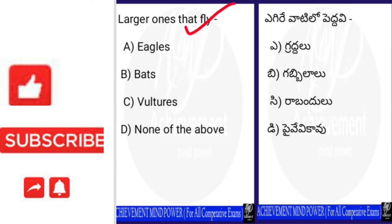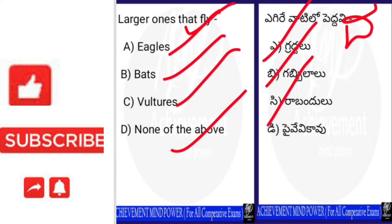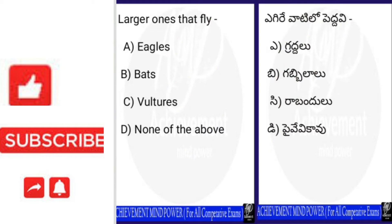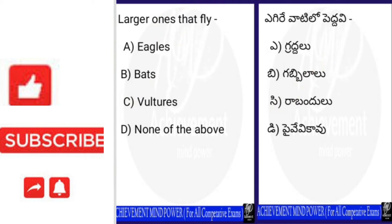Next question: what is the larger one that can fly? Options are: A. Eagle, B. Bats, C. Vulture, D. None of the above. For this question the right answer is C — Vulture. The vulture flies at the greatest height. It is the largest bird that can fly. Vulture flies at the highest altitude — that is why the answer is C, Vulture.